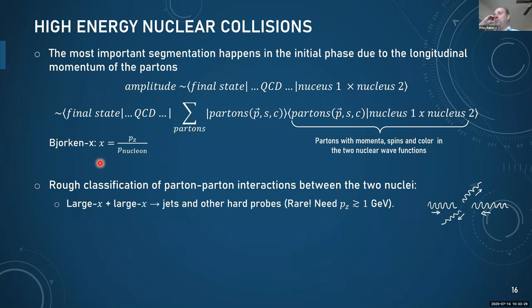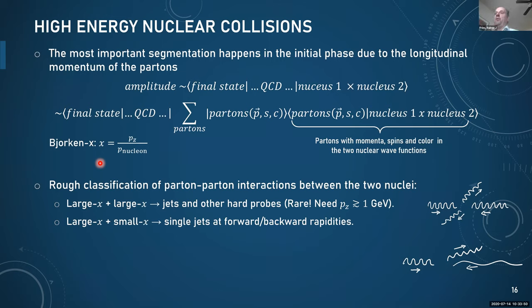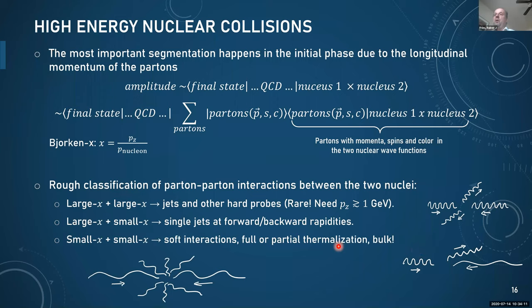These high-energy hard probes are relatively rare compared to the overall incidence of collisions, especially at very high energies. You need pT of a few GeV, which means the original parton also needs to be of that order. For large-x and small-x combinations, the large-x parton will probably continue undisturbed, giving something in the forward and backward directions — not very interesting, though some study this in the context of color glass. For small-x on small-x, those are soft interactions with no perturbative QCD. This is where the system thermalizes, at least gets close to thermal equilibrium, forming the bulk and what becomes the quark-gluon plasma.